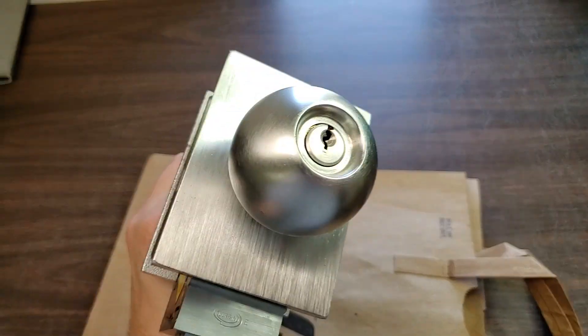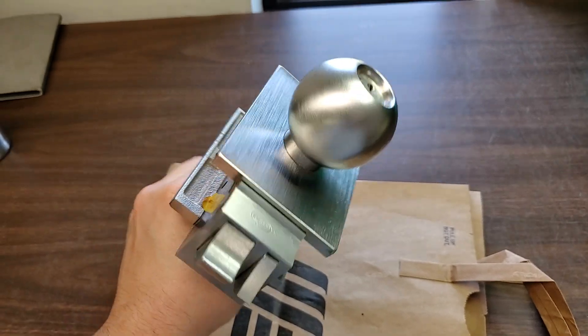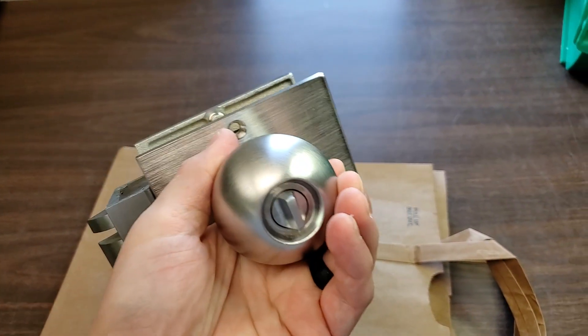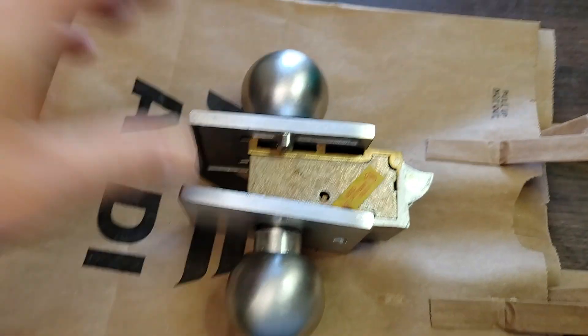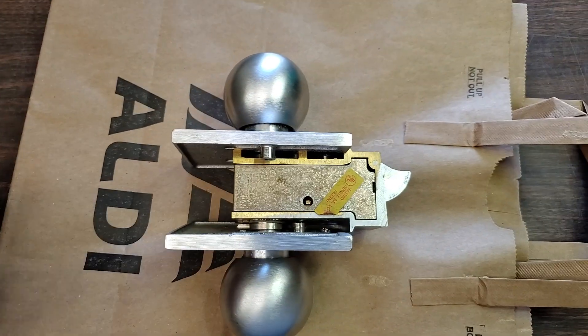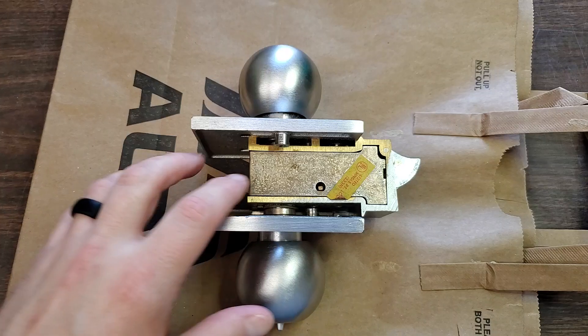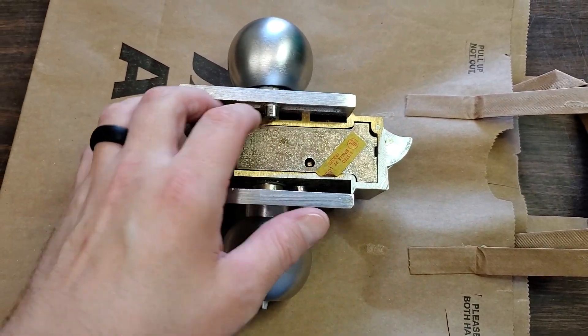This is a Corbin unitized lock set, and what is interesting about this is that this lock set does not have a separate latch and does not have a typical tubular or cylindrical setup.